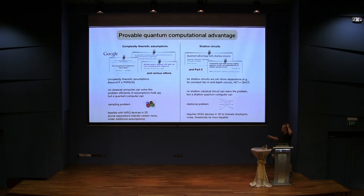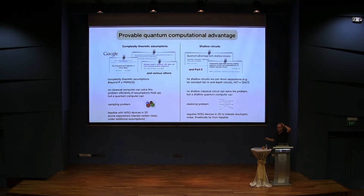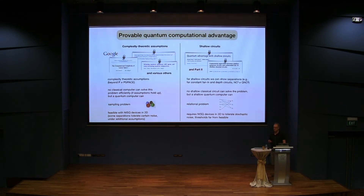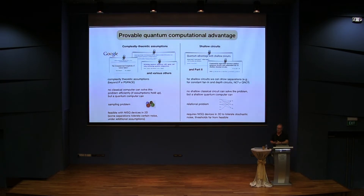The other approach is what I'm going to talk about in the second part of the talk. That one circumvents the problem of these complexity theory limits in a sense, because we are here only looking at shallow circuits. It turns out for shallow circuits — complexity classes that contain only problems that can be solved in constant depth — we can show separations between quantum and classical. In particular, this is the class of constant fan-in, constant depth circuits, and we can show that the quantum analog is different.